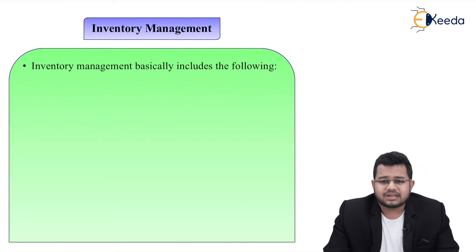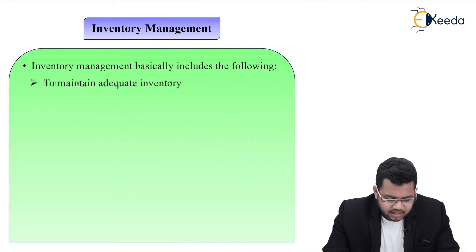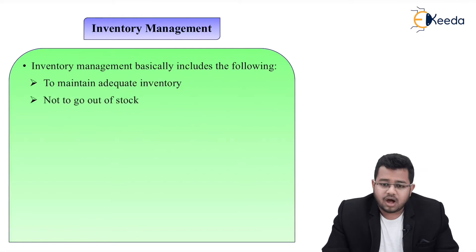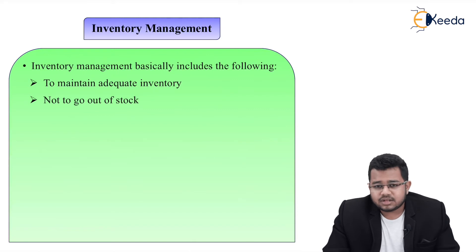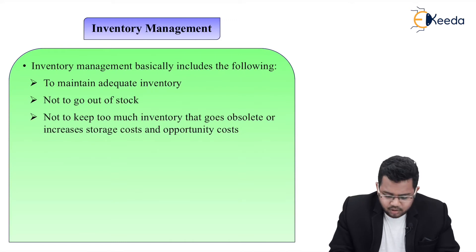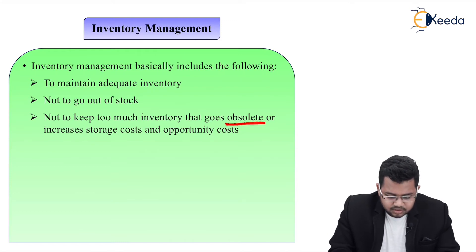Inventory Management basically includes the following. First, to maintain adequate inventory — meaning the amount of inventory is sufficient. Second, not to go out of stock — meaning less or zero inventory should be avoided. Third, not to keep too much inventory that goes obsolete, or that increases your storage cost and opportunity costs.